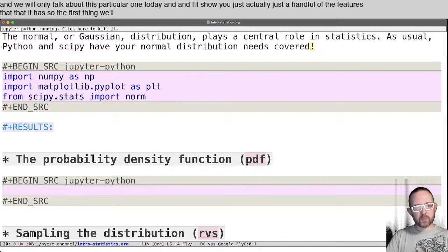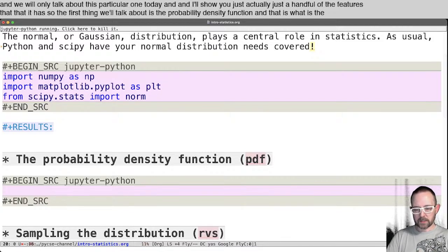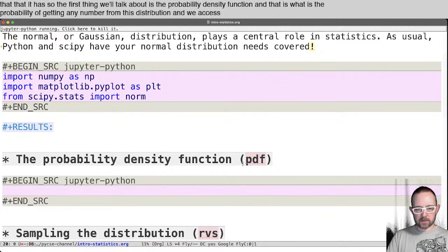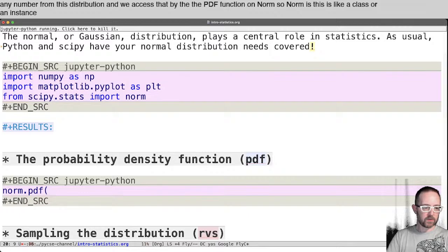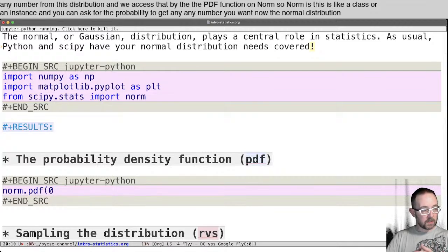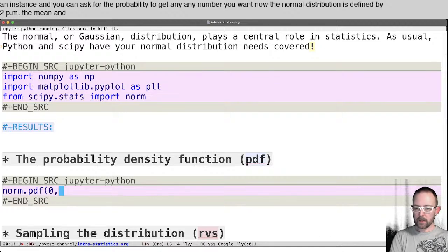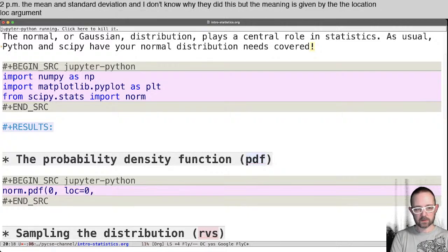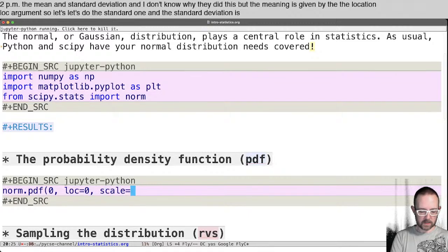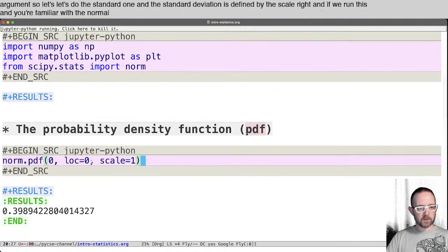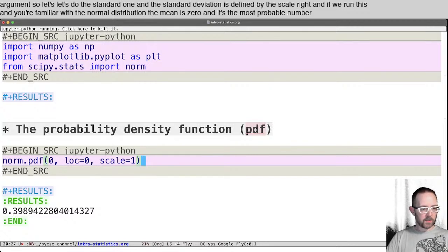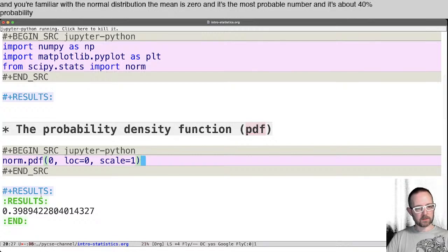So the first thing we'll talk about is the probability density function, and that is what is the probability of getting any number from this distribution, and we access that by the PDF function on norm. So norm is like a class or an instance, and you can ask for the probability to get any number you want. Now the normal distribution is defined by two parameters, the mean and the standard deviation, and I don't know why they did this, but the mean is given by the location LOC argument. So let's do the standard one, and the standard deviation is defined by the scale. And if we run this, and you're familiar with the normal distribution, the mean is zero, and it's the most probable number, and it's about 40 percent probability of getting the mean out of this.